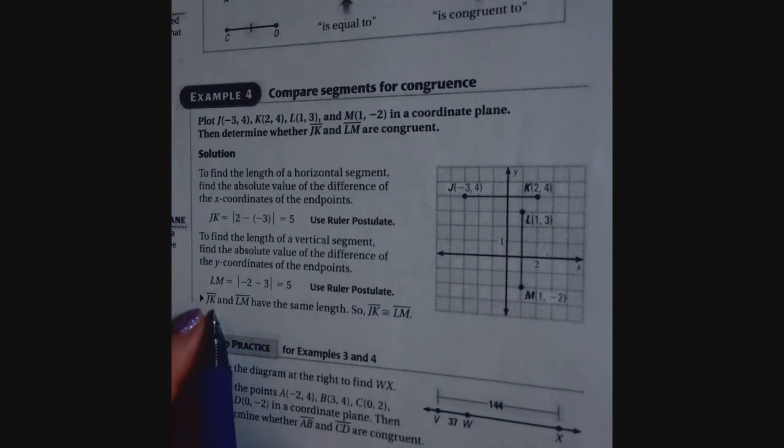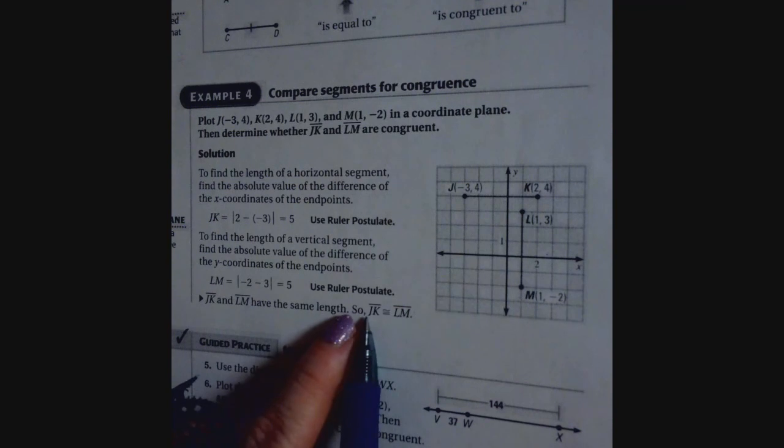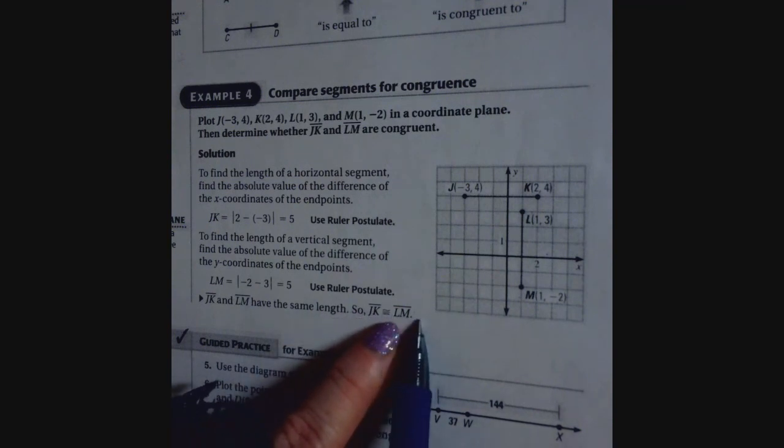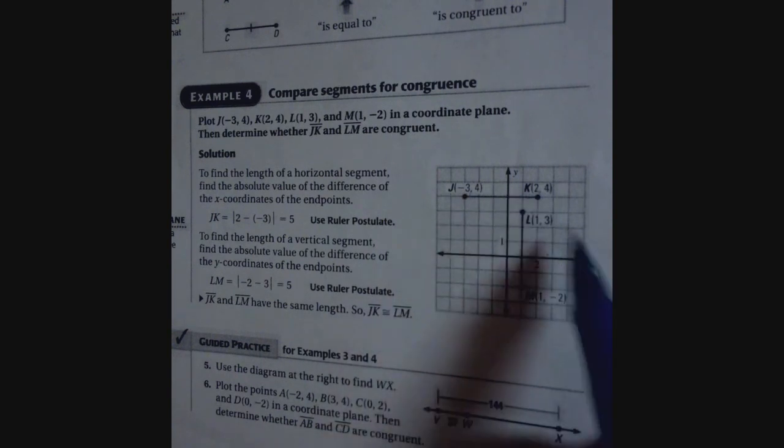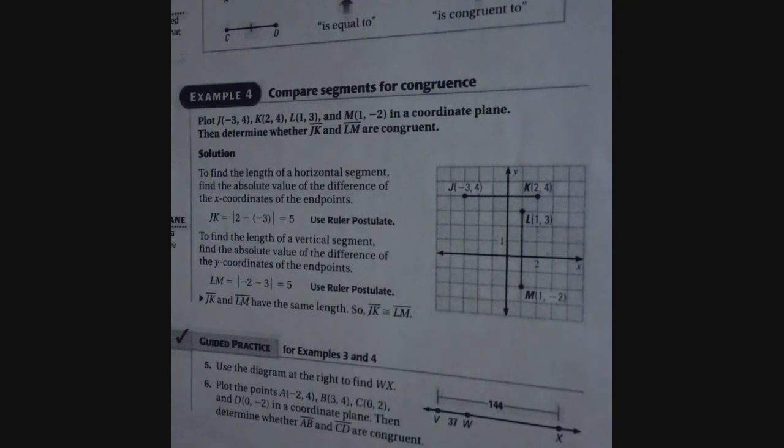So then you can write the statement. JK, the segment JK and LM have the same length. So JK is congruent to LM. You notice they always go alphabetically. J to K, L to M. So they are congruent. And that's how you can prove the statement. You can't just look, you have to prove it. So you proved it by the ruler postulate.